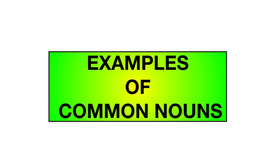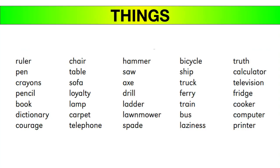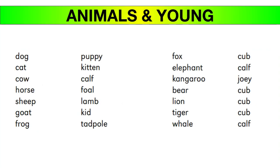Let's see some examples of common nouns. These examples will help you identify common nouns. First are the names of things: ruler, pen, pencil, book, lamp — these are all common nouns. They are common, everyday things. Right?